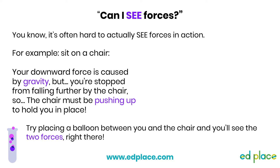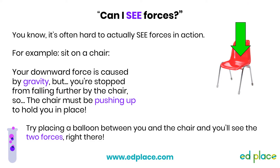Seeing forces can be quite tough, and you may need to use a bit of imagination, but maybe this could help. If you're sitting on a chair, your downward force or weight is caused by gravity. So what's stopping you falling to the ground? The chair! That must mean that the chair is providing an upward force to balance your weight pushing down. That's why you stay on the chair. If you don't believe me, just try this: blow up a balloon, place it on the chair, and slowly sit on it. Watch what happens to the balloon and try to explain why that's happening using this idea of opposing forces.